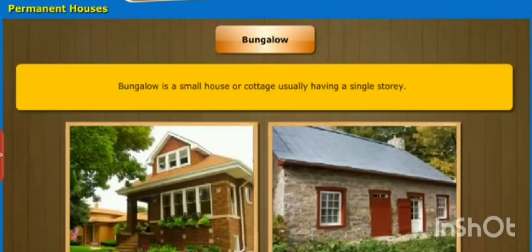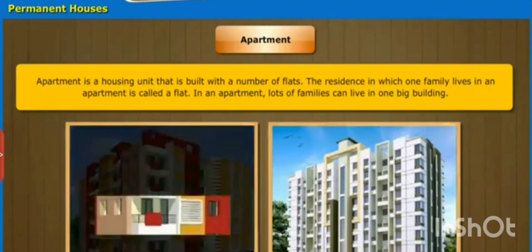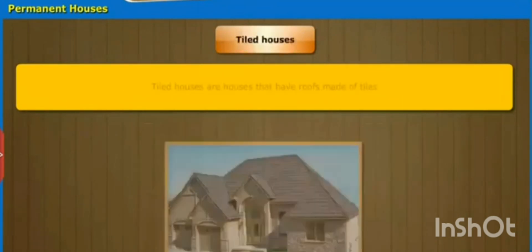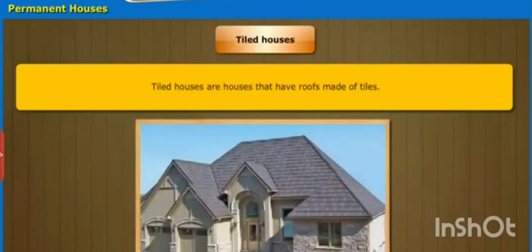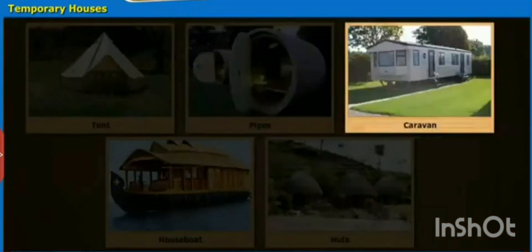A bungalow is a small house and an apartment is a building-type of house. These are examples of permanent houses. Temporary houses are houses where people live for a short period of time.